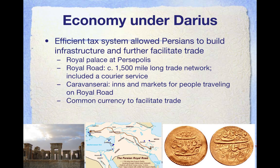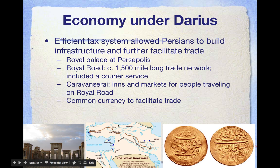In addition to establishing a very impressive royal palace at Persepolis, another very good example of infrastructure was the Royal Road — over 1,500 miles long, closer to 1,700 miles. The purpose of the Royal Road was to facilitate trade; we could compare it to something like the Silk Road from China. It also set up a courier system, like a postal service essentially. According to historical records, it could take as few as seven days for correspondence to go from one end of the Royal Road to the other — thousands of years ago — so the fact that messages could travel back and forth in about a week is very impressive.